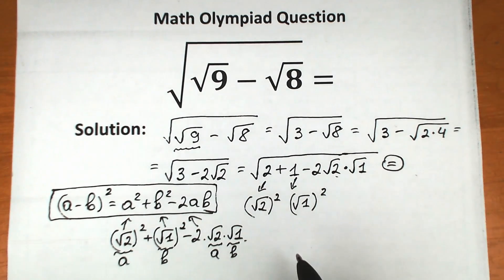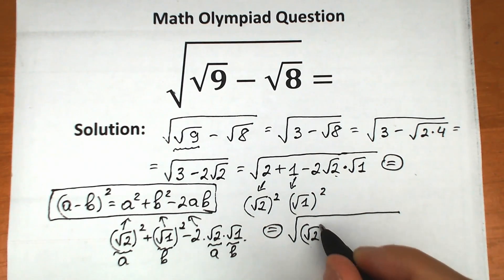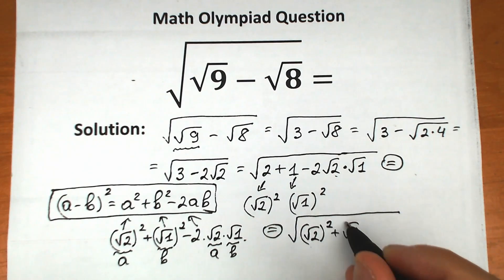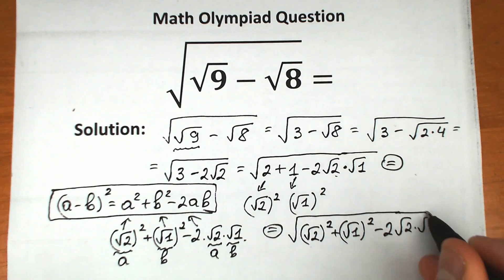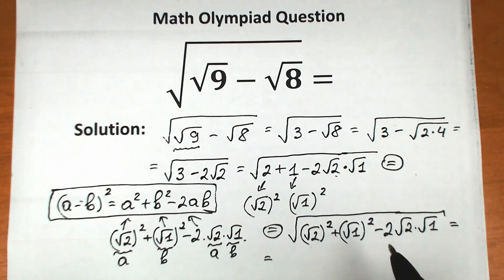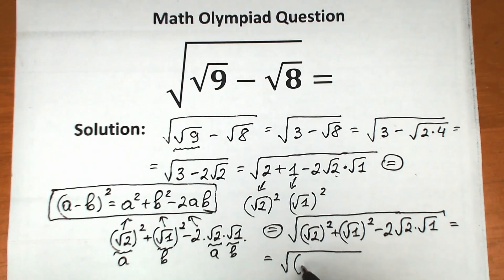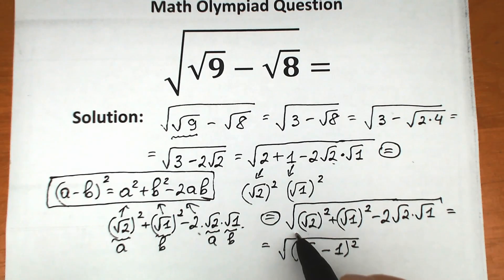So we can write this as the square root of the quantity square root of 2 minus 1, all squared. This means we have square root of 2 squared plus square root of 1 squared minus 2 times square root of 2 times square root of 1 inside the outer square root. We can now cancel the outer square root sign with the square, giving us square root of 2 minus 1.